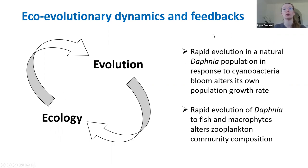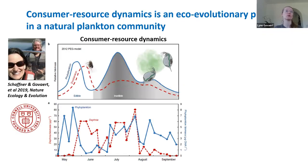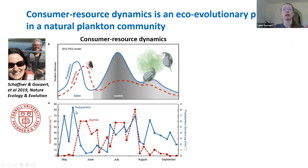I want to highlight two examples. One in which we observed rapid evolution in a natural Daphnia population in response to cyanobacteria bloom, altering back its own population growth rate. And another in which authors demonstrated rapid evolution of Daphnia to ecological environments of fish and macrophytes. Together with Lindsay Schaffner and Nelson Harrison, we investigated consumer-resource dynamics in Lake Oneida, looking at phytoplankton and zooplankton dynamics across one season.